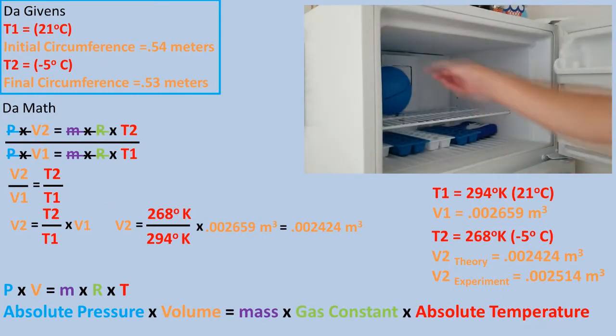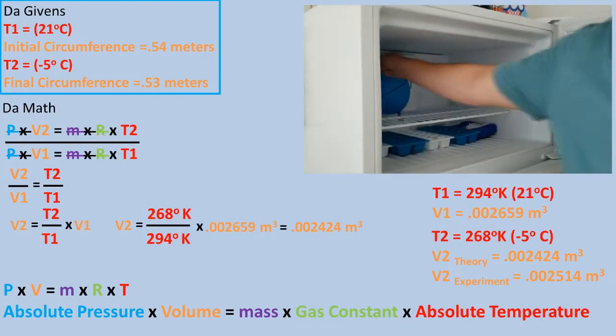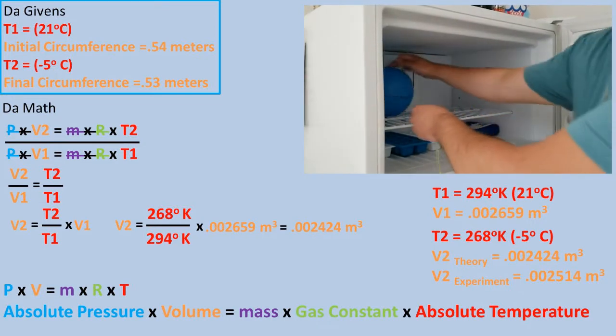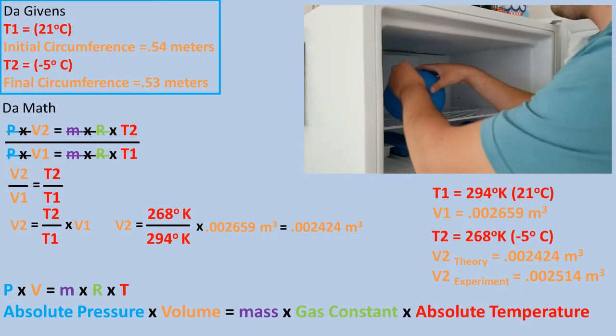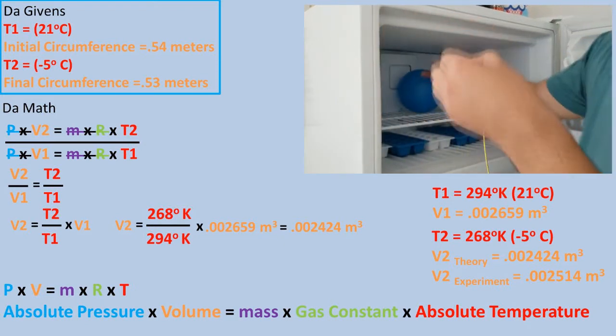So if temperature decreases and mass, gas constant, and pressure remain the same, the volume will decrease. So volume and temperature are directly proportional. This means that volume decreases, temperature decreases, and volume increases, temperature increases.